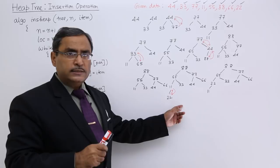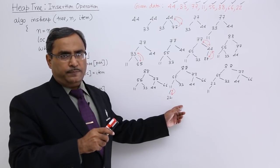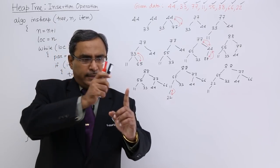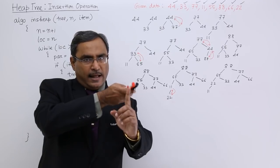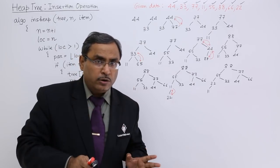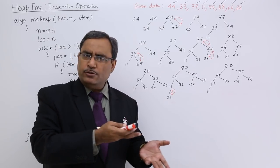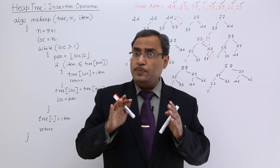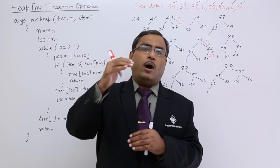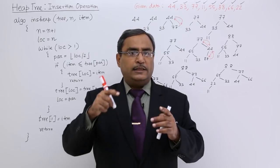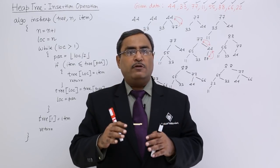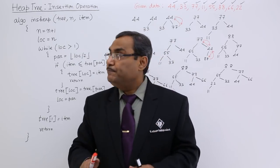We have shown you that always the data will be inserted at the last location. If N is the number of data existing from location number 1 to location number N, then the data will be inserted at the N plus 1 place and that is the free space. Then I shall compare it with the parents and if required then I shall go for reheaping operation, otherwise it will be remaining as it is. Reheaping operation will be required when the parent node value is less than this item. The parent node's content will be coming down and this process will be repeated. Reheaping may or may not be there depending upon the value of the parent node and the item.